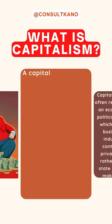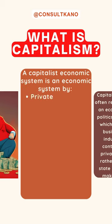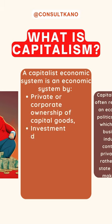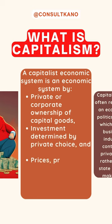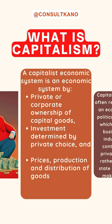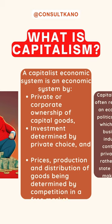A capitalist economic system is an economic system characterized by private or corporate ownership of capital goods. It's also an economic system where investments are determined by private choice and where prices, production, and distribution of goods are determined primarily by competition in a free market.